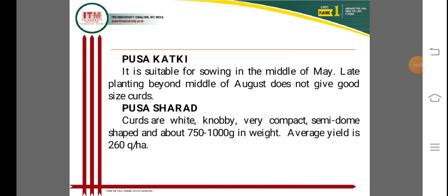Pusa Kranti is an important cauliflower variety suitable for sowing in mid-May, with late planting extending to mid-August. Planting beyond mid-August does not give good curd size. It is an important early variety with specific planting windows to ensure proper curd development.